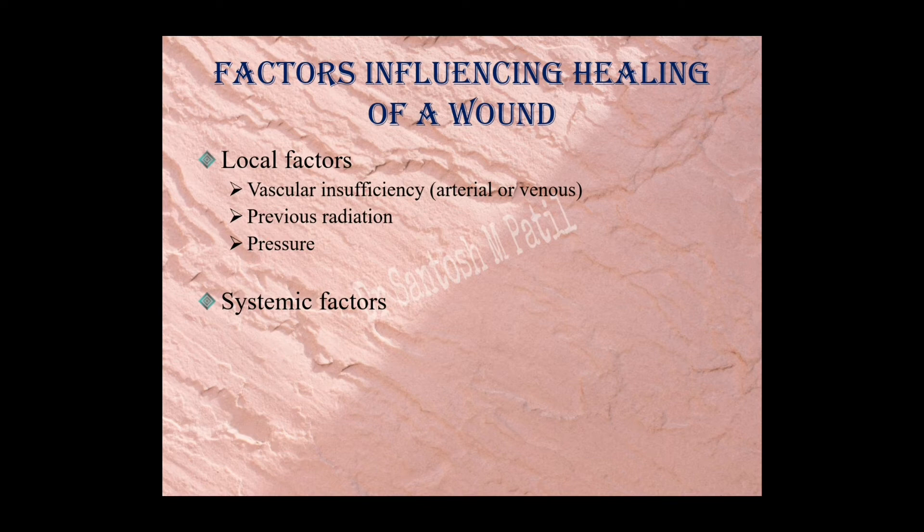Local factors include vascular insufficiency, previous irradiation, and pressure. Vascular insufficiency is very important when dealing with chronic wounds — it is the main factor for poor wound healing. Vascular insufficiency may be in the form of atherosclerotic blockage or venous congestion or chronic venous insufficiency in varicose veins. It prevents wound healing mainly by decreased fibroplasia and decreased collagen synthesis, hampering fibroblast-induced collagen deposition.